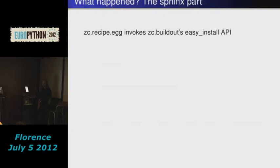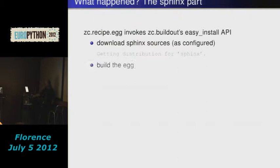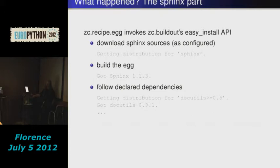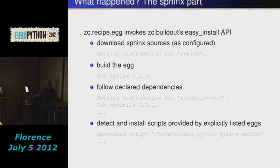Doing so means exercising the easy install API that is provided by buildout. Buildout depends on distribute in order to be able to use easy install, and the egg recipe actually uses that API to install the egg. We don't reinvent the wheel here. Installing the egg means downloading the source of the egg, building it, following the dependencies the egg declares — so it depends on docutils, Jinja, and Pygments — all that stuff will be downloaded and installed. In the end, the recipe looks into the egg to find which console scripts are defined as entry points, and then creates scripts for them.